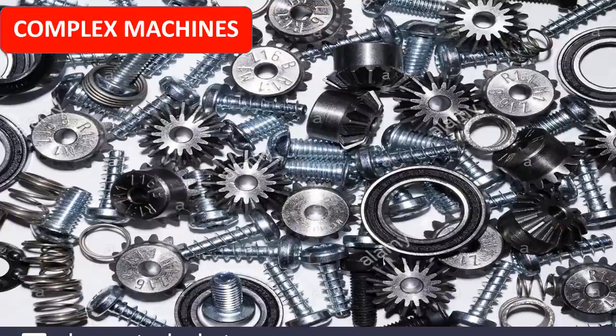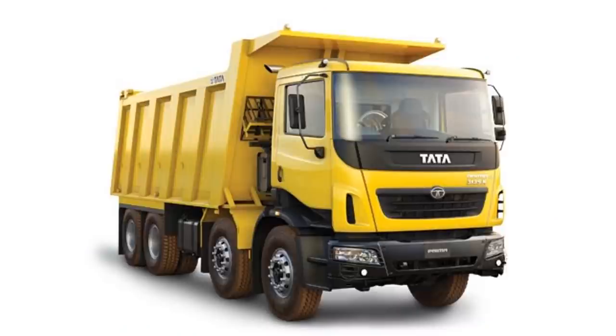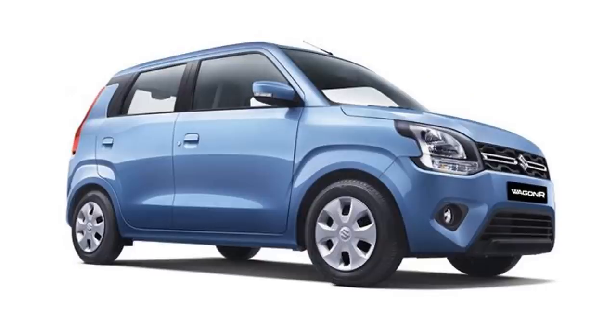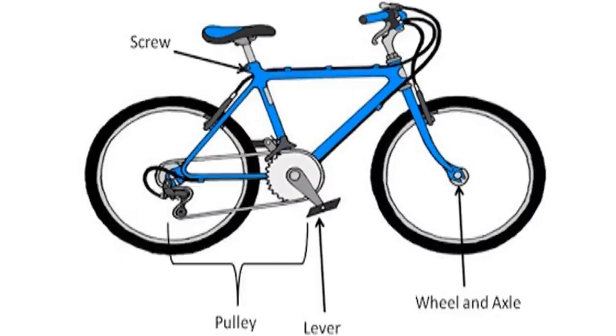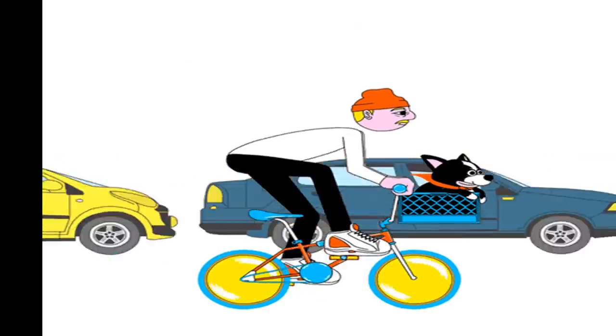Complex machines are made up of many simple machines. Complex machines like trucks, cars, or bicycles use many moving parts. They combine many simple machines such as levers, pulleys, and gears to get work done.